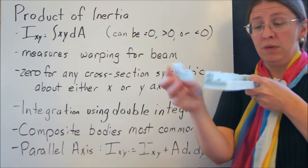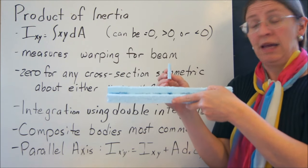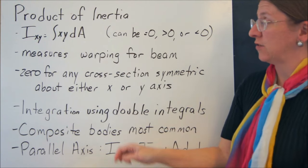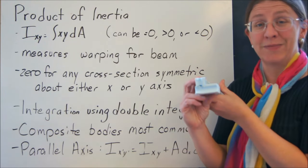If you take an L out of the middle of this beam, even if it started flat, it might not end up flat. So that's what you're talking about when you're talking about products of inertia. It only comes into play when you're talking about beam bending with asymmetric cross-sections.